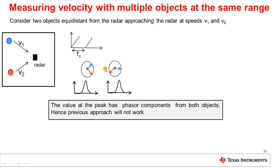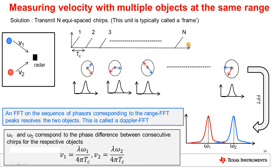The solution is to transmit a series of N equispaced chirps instead of just two. The range FFTs corresponding to each chirp have peaks at identical locations, but the discrete sequence of phases at those peaks will consist of two rotating phasors at angular frequencies omega 1 and omega 2, corresponding to the two velocities V1 and V2. An FFT on this discrete sequence will then show two peaks at omega 1 and omega 2, from which you can back-calculate the velocities.